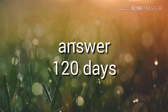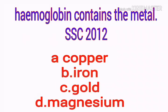Hemoglobin contains which metal? Options: a) copper, b) iron, c) gold, d) magnesium.